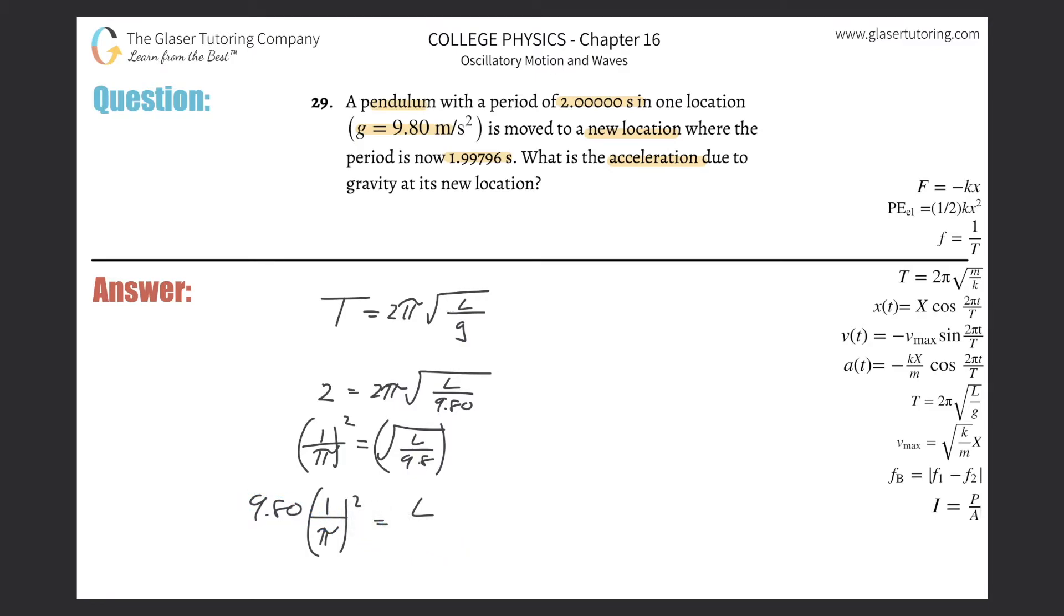You got your answer. So now all we got to do is plug this into the calculator. So the length here of the pendulum's arm will be 9.8 times then parenthesis 1 divided by π squared.